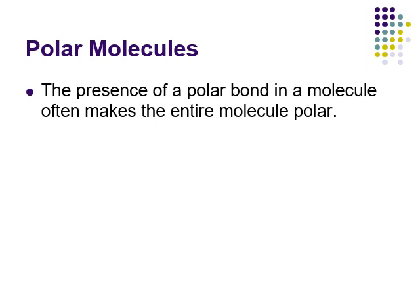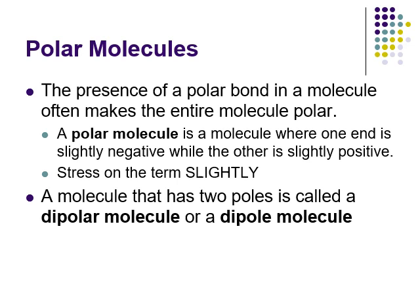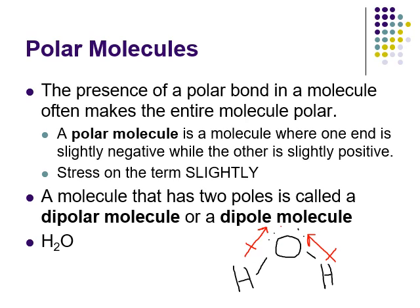Polar molecules - this is where it gets a little odd. The presence of a polar bond in a molecule can make the entire molecule polar. A polar molecule is one that has a slightly positive end and a slightly negative end - also called a dipolar molecule or dipole. Water is a great example: looking at the structure with oxygen in the center bonded to two hydrogens, electrons are being pulled toward the oxygen, giving the oxygen end a slightly negative charge and the hydrogen end a slightly positive charge. That would be a polar molecule.